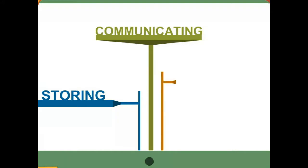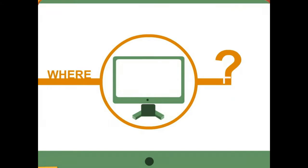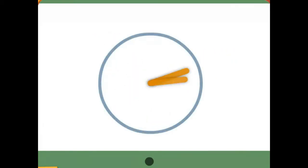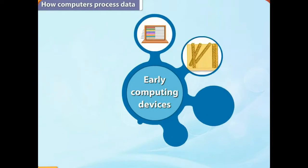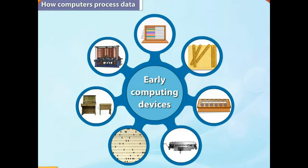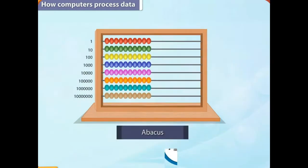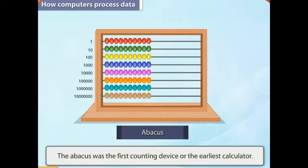We use computers for various purposes like storing information, communicating, and entertaining ourselves. So where did the computer come from? Let's travel back in time to know the history of computers. Around 3,000 years ago, people used the abacus to calculate complex sums. The abacus was the first counting device or the earliest calculator. It was used to add and subtract numbers.